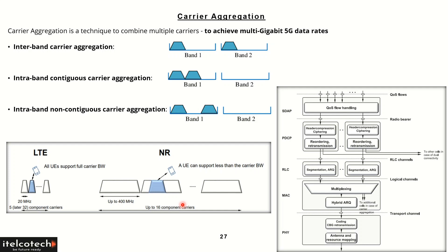For any telecom operator, it is possible that we wouldn't get a contiguous spectrum altogether to provide 20 Gbps at a cell level. In that case, different carriers can be picked up from different frequency ranges. We have FR1 and we have millimeter wave, which is FR2. We can pick and choose different carriers that are available and aggregate them to achieve the peak data rates that are defined.